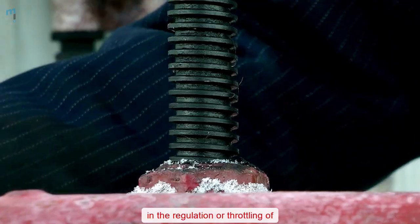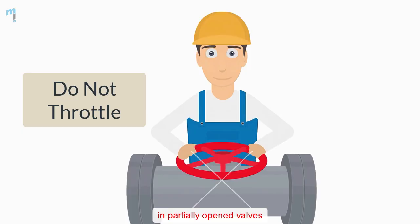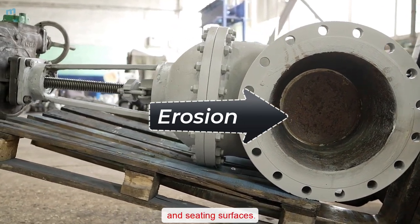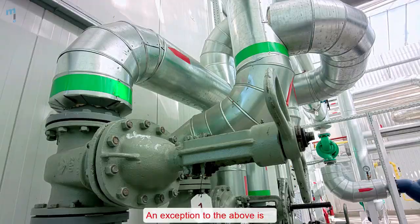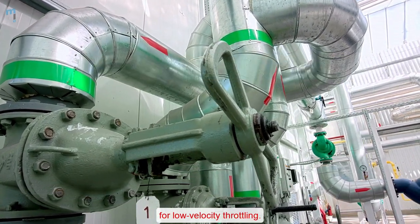Gate valves should not be used in the regulation or throttling of flow because accurate control is not possible and high flow velocity in partially open valves may cause erosion of the discs and seating surfaces. An exception to the above is specially designed gate valves that are used for low velocity throttling.